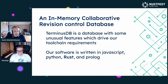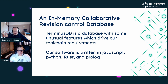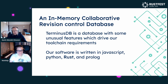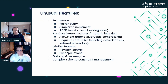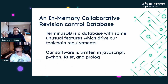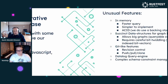We're an in-memory, collaborative, revision control graph database. We have fairly specific requirements and slightly unusual features, and that has driven some of the toolchain requirements that we have. Our software is also a very polyglot house. We have clients written in JavaScript and in Python. We have Rust and we have Prolog, which is somewhat unusual in the modern day. There's also C involved as well.